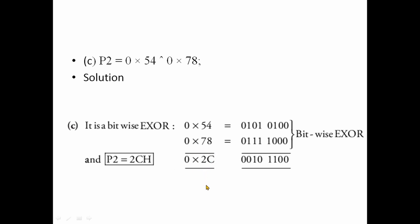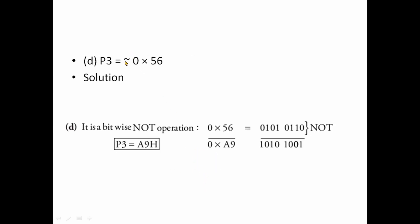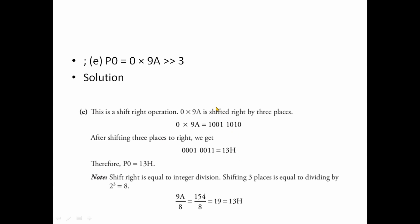NOT — it is just the opposite. Not gives the complement. Right shift: 0x9A >> 3. 0x9A is 1,0,0,1,1,0,1,0. Shift right by 3 positions gives the result.